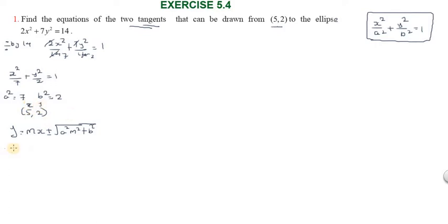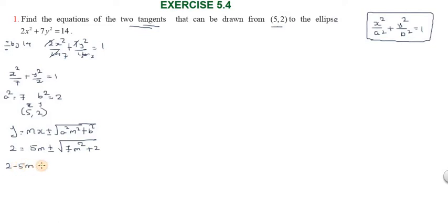Substituting the point (5, 2) into the tangent equation: 2 - 5m = √(7m² + 2).